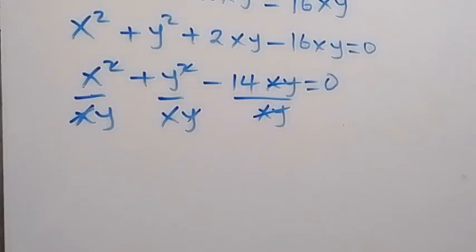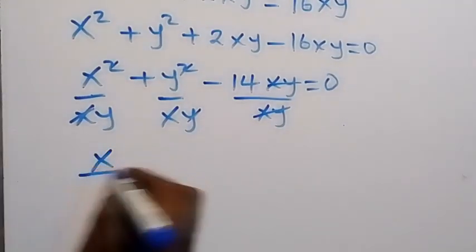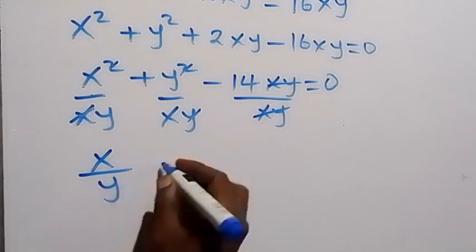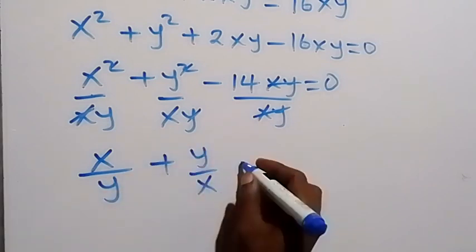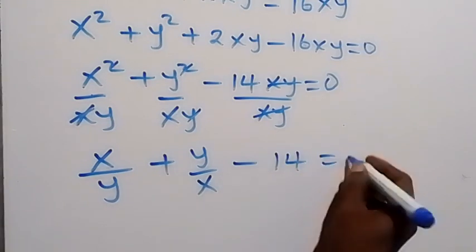So what we have left here will be x over y plus y over x minus 14, then equals 0.